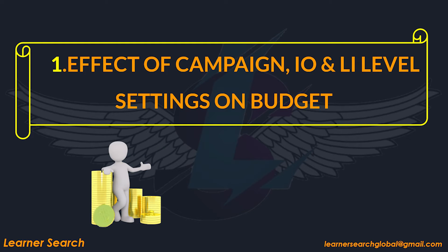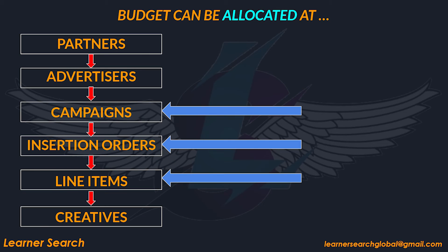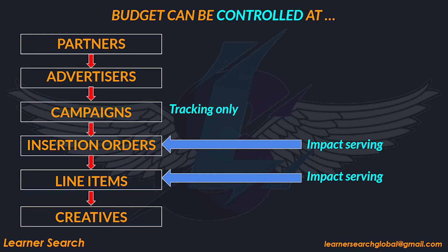Effect of campaign IO and line item level settings on budget. The platform hierarchy is shown in this slide. Budgets can be allocated at 3 levels: campaign, IO, and line item levels. However, it can only be controlled at IO and line item levels.